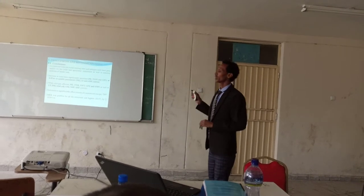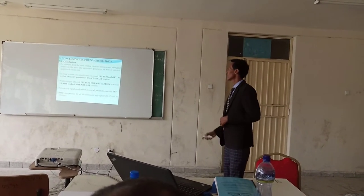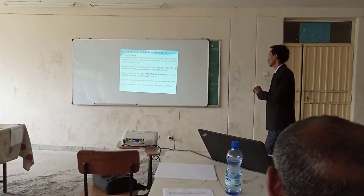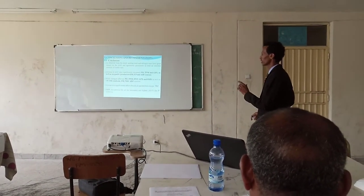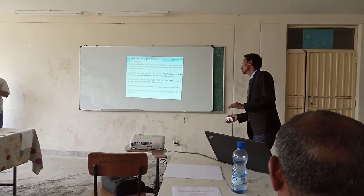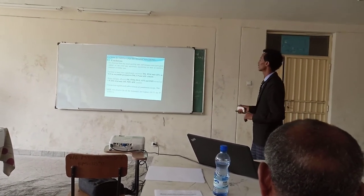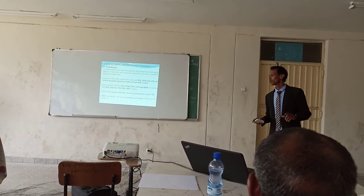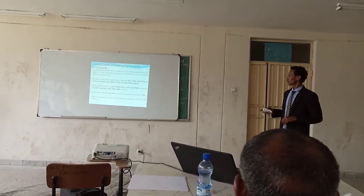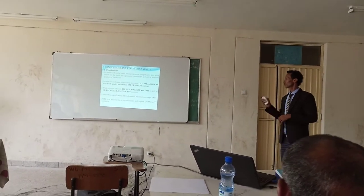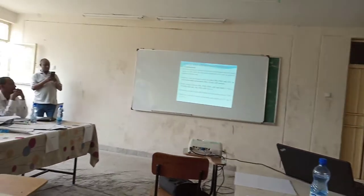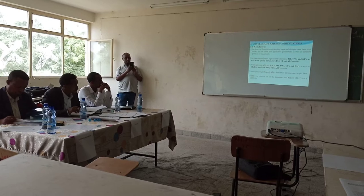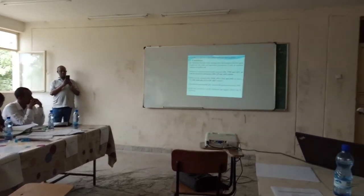Nitrogen significantly affected plant height, tiller number, cob weight, spike weight, carotid content, green forage yield, dry matter, and quality parameters including crude protein, organic matter, ash content, neutral detergent fiber (NDF), and acid detergent fiber (ADF). The interaction of seeding rate and nitrogen rate significantly affected almost all parameters except tiller number per plant.